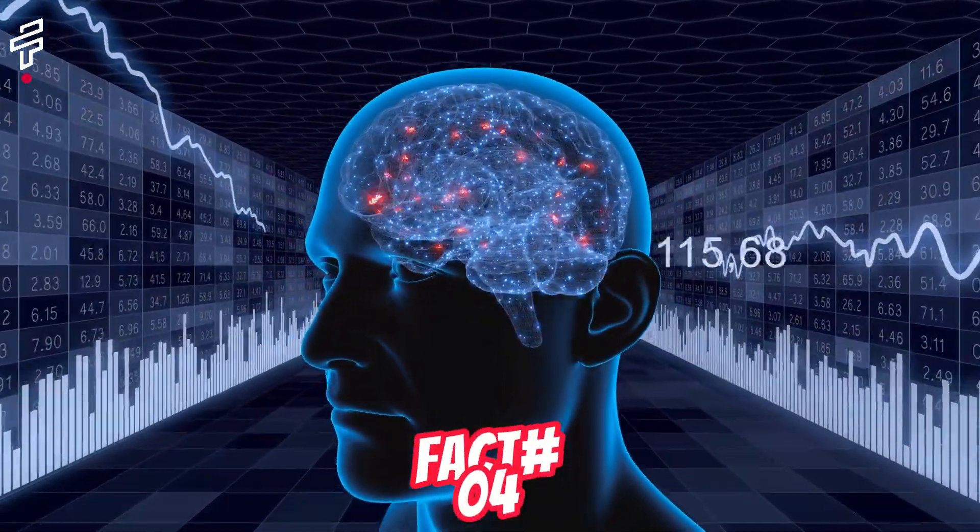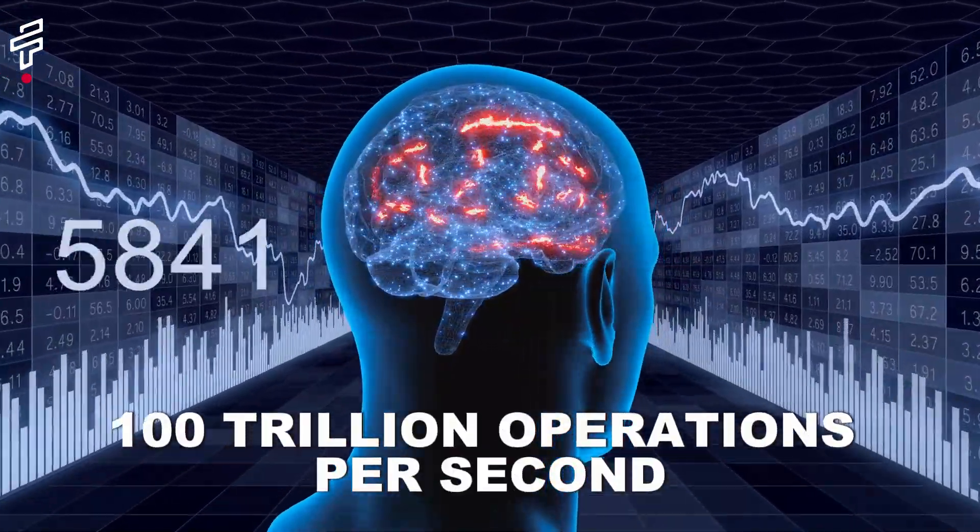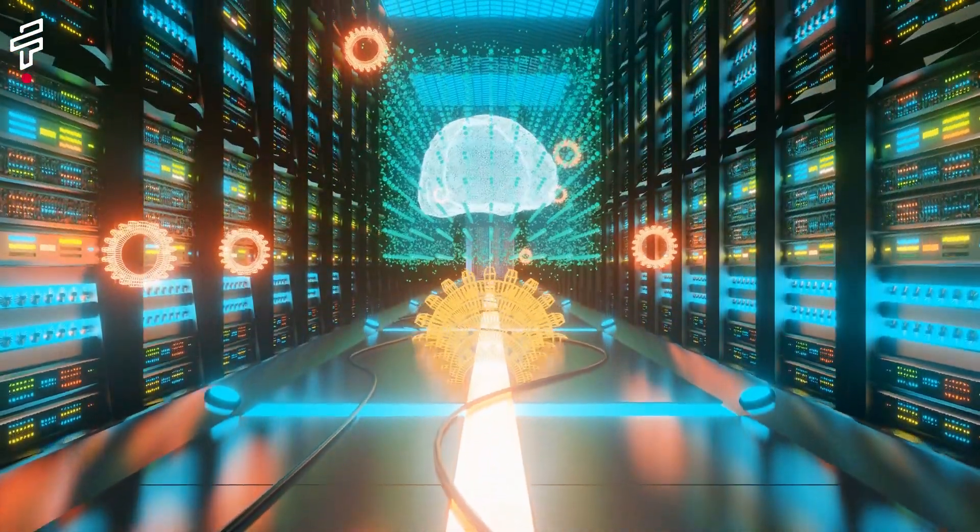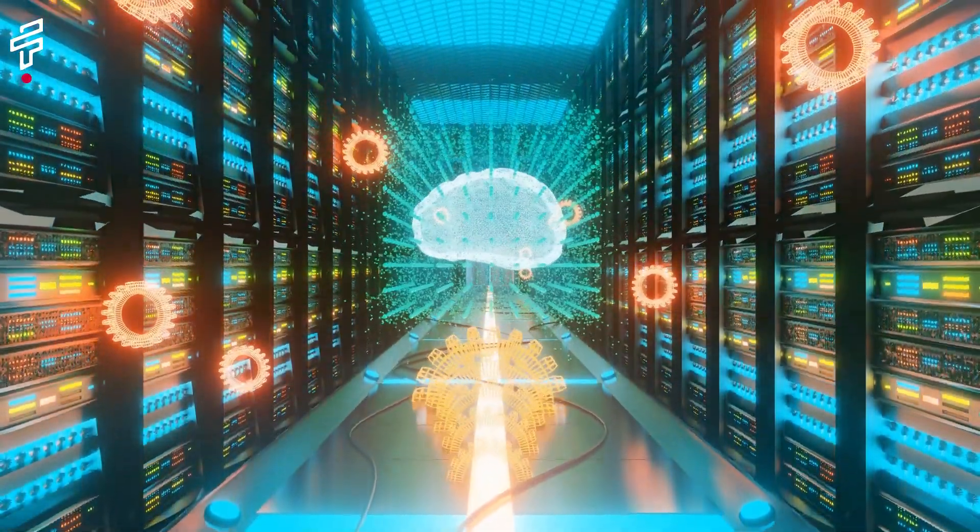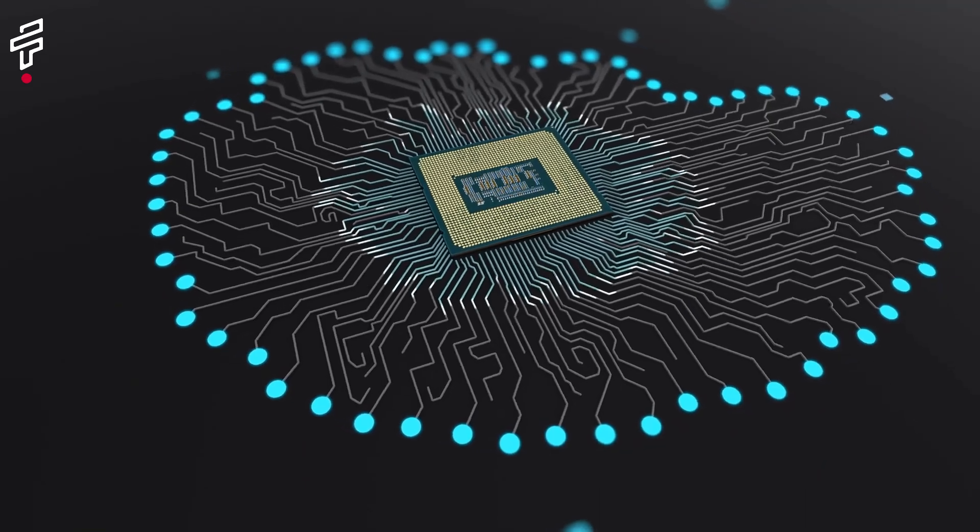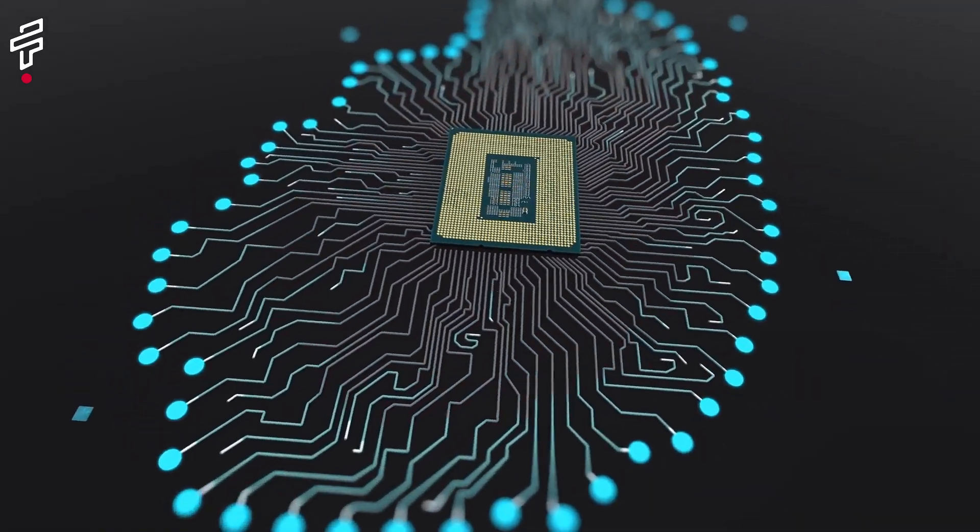Fact number four, the human brain is capable of processing information at speeds of up to 100 trillion operations per second. This is faster than any computer in the world and it is possible because the brain uses parallel processing. Parallel processing means that multiple parts of the brain are working on the same task at the same time.